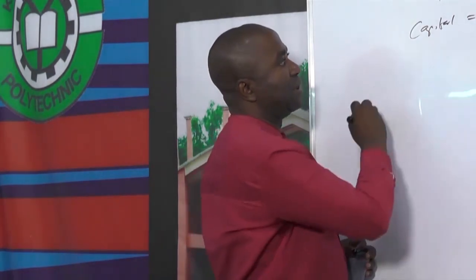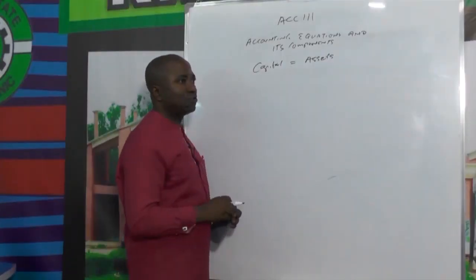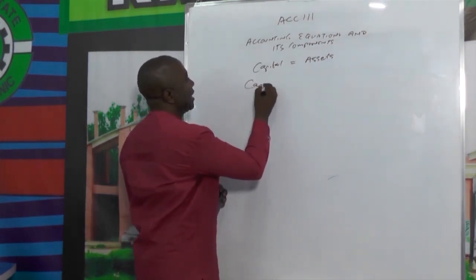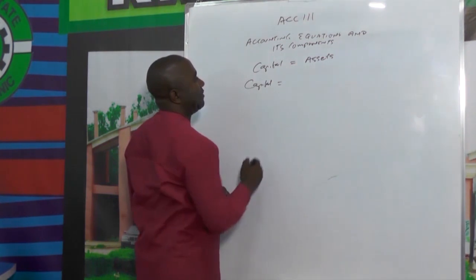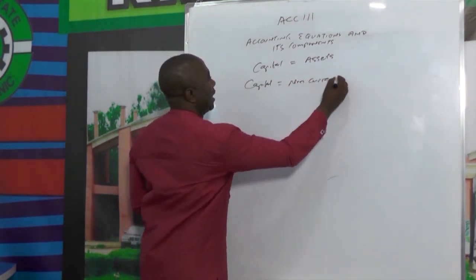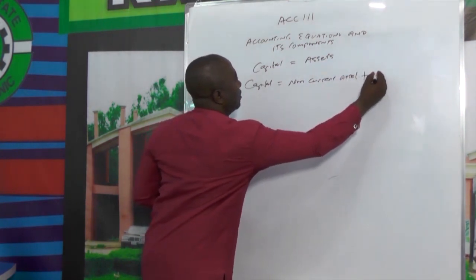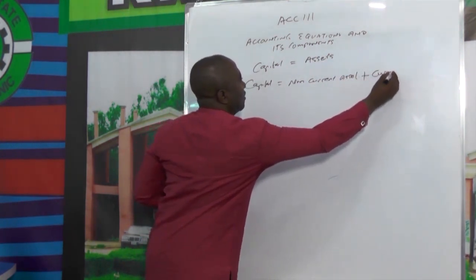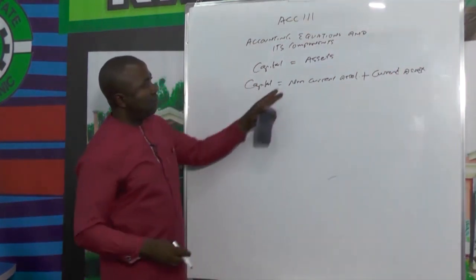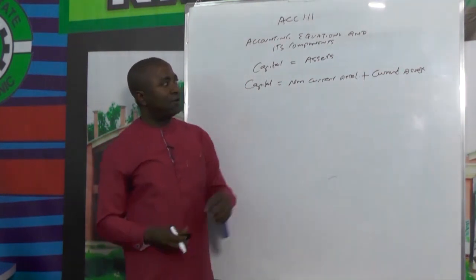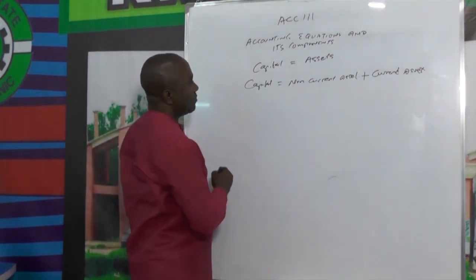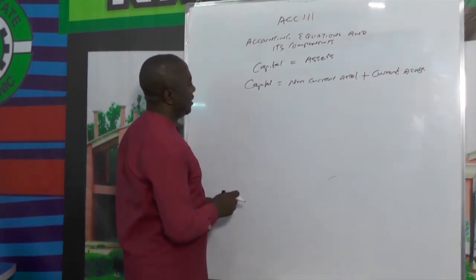The accounting equation can be put in this format: capital is equal to assets. This asset can be divided into two — we have non-current assets plus the current assets. So we can have non-current assets and then we can have the current assets. Now let's give a very simple illustration.